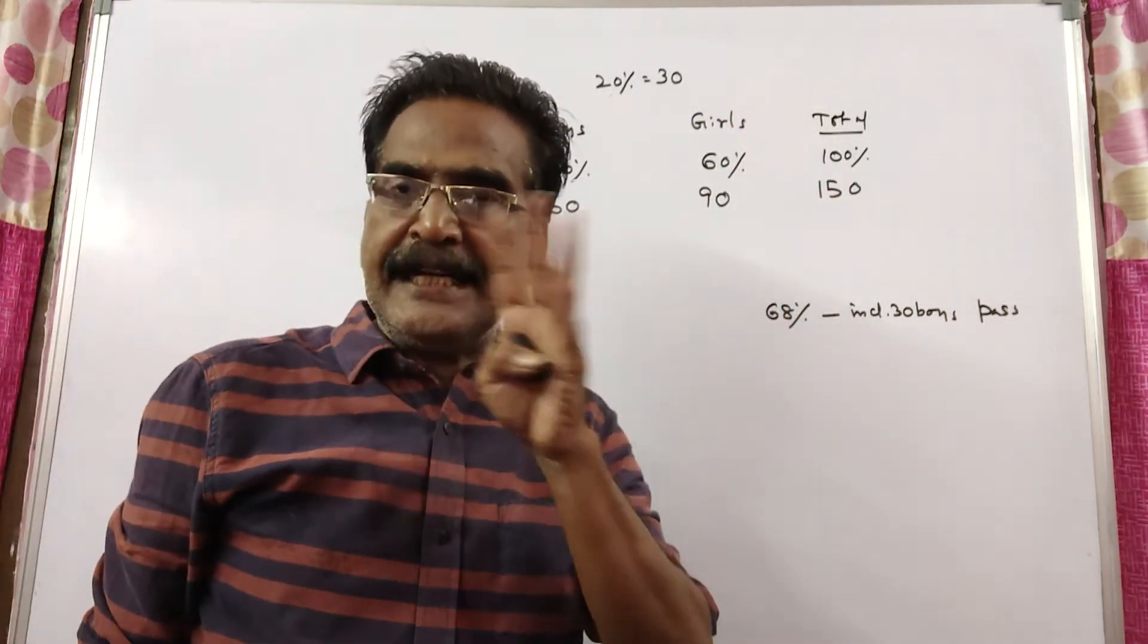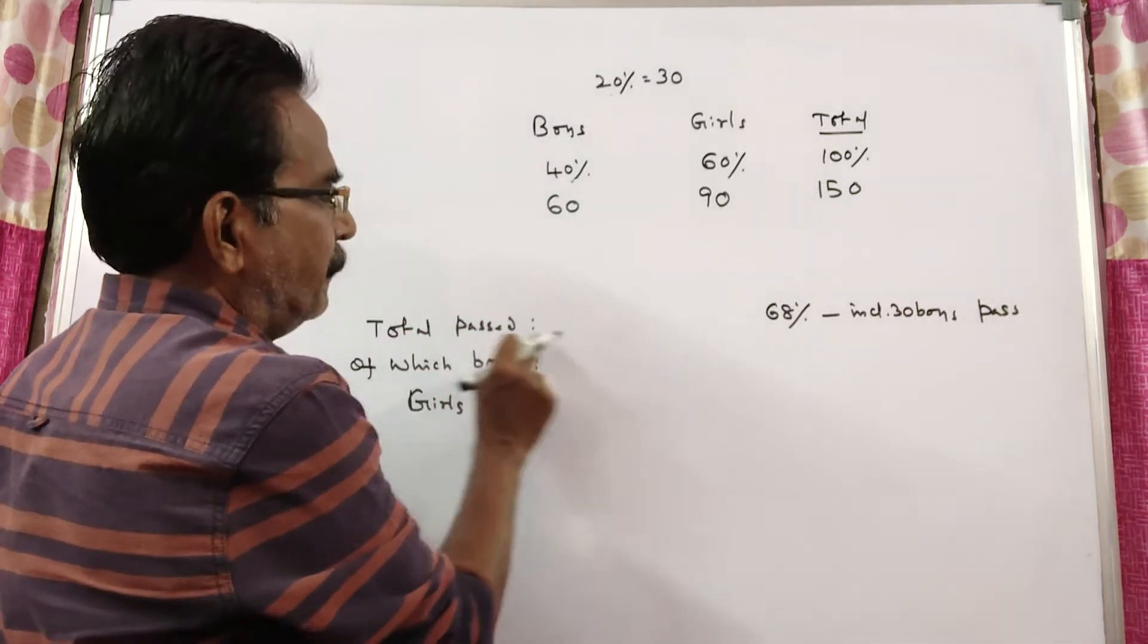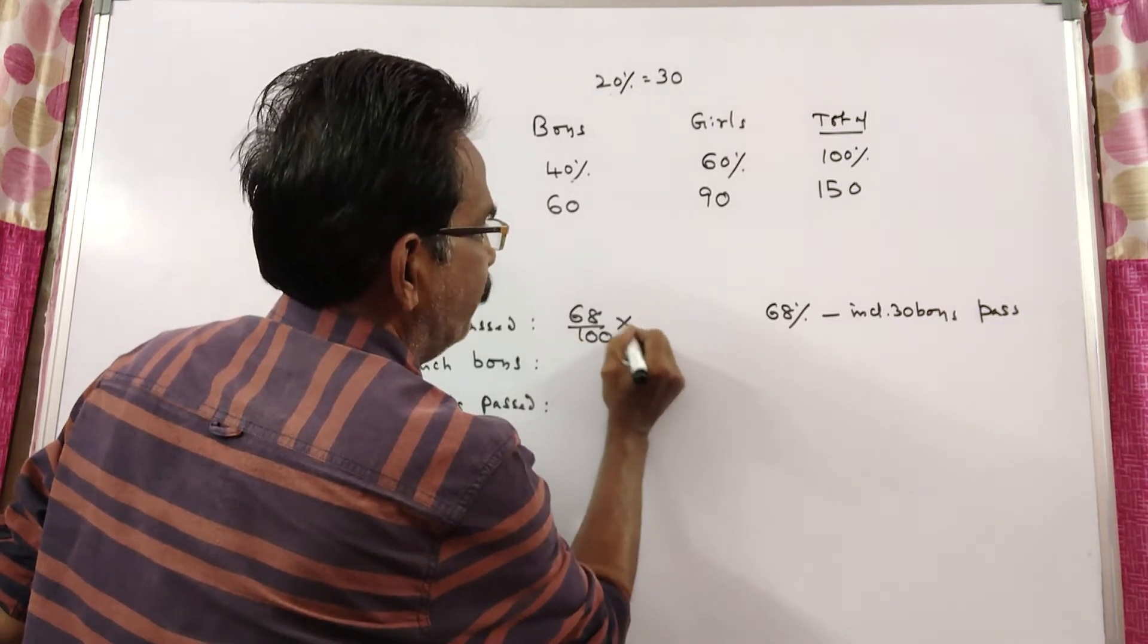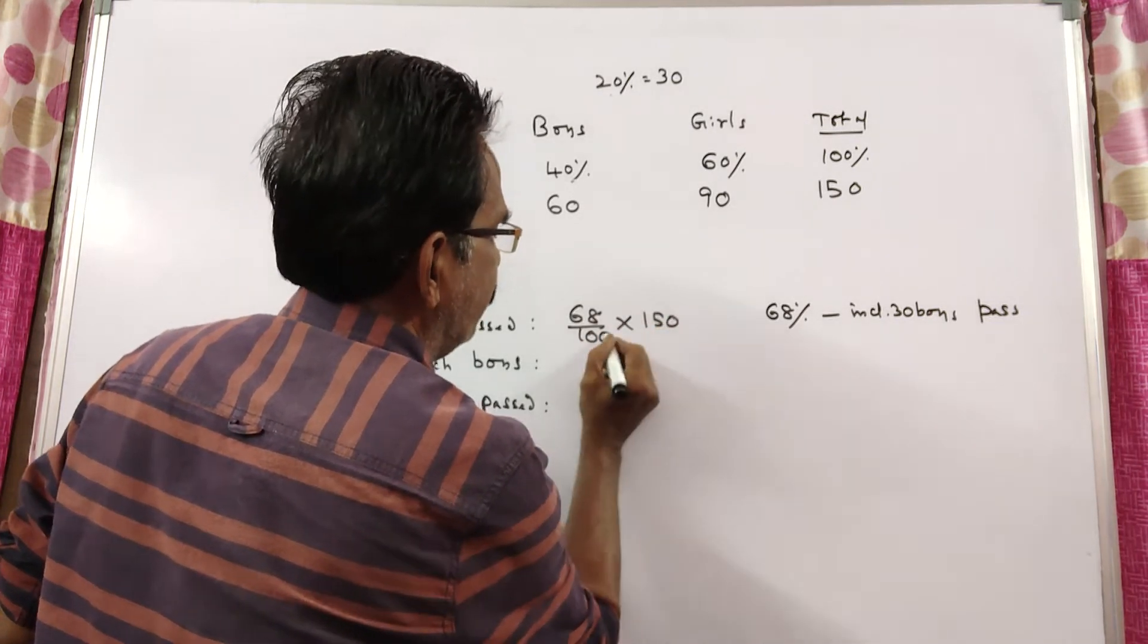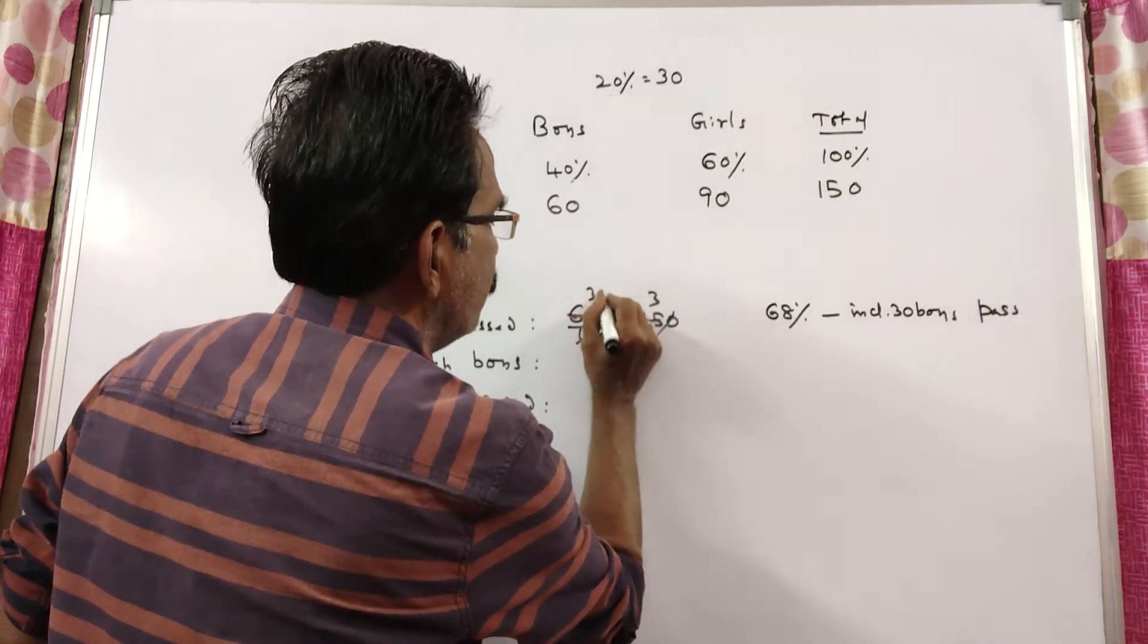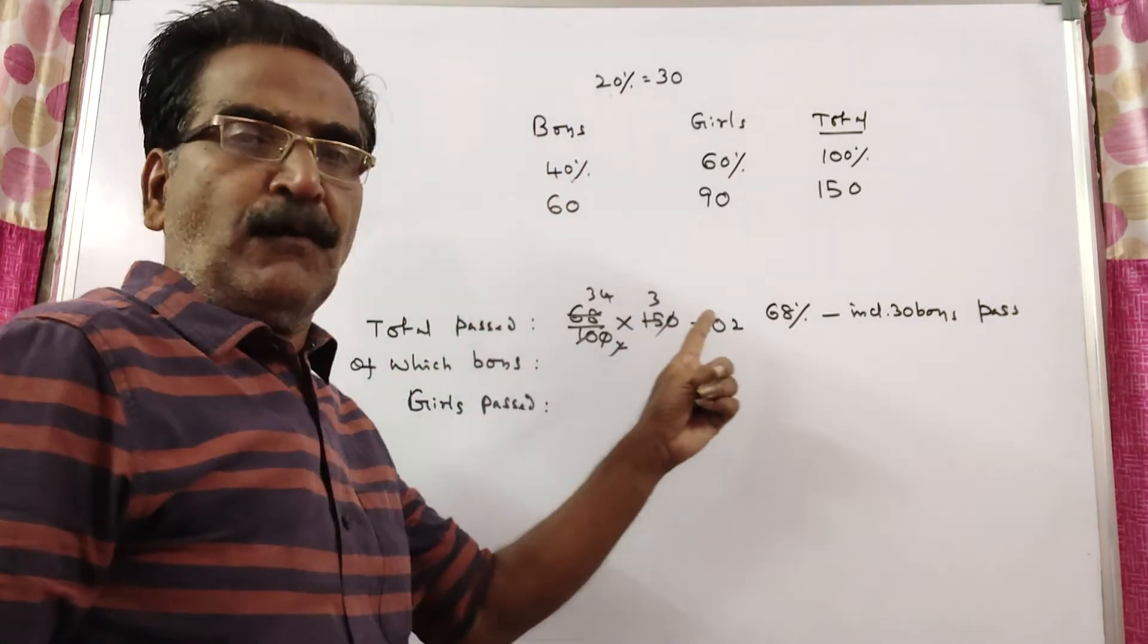Now it is given that 68 percent of the students passed. So total passed, 68 percent of 150. 68 percent of 150, calculating: total passed 102.